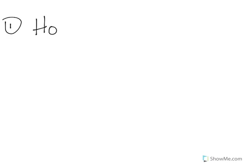H-naught, and then the alternative, H-A. In H-naught, just like we do with confidence intervals, we have to pick our population parameter. As we have done in our course, our population parameter is going to be either mu or p. And our null is always equal to some value.